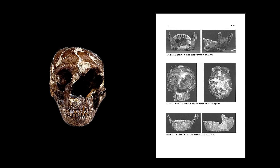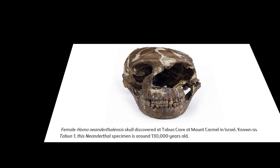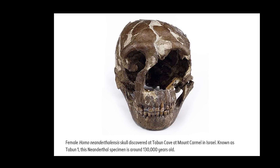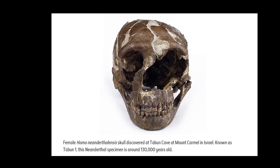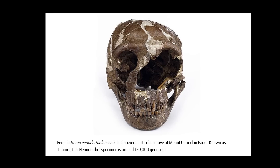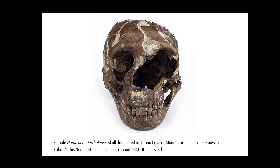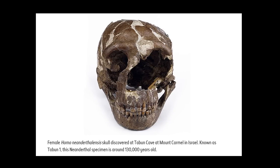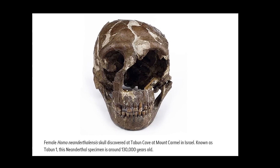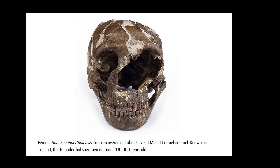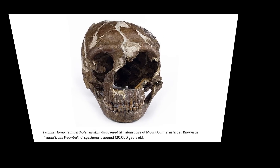Tabun cave was occupied intermittently during the Lower and Middle Paleolithic, from 500,000 to around 40,000 years ago. In that period, deposits of sand, silt, and clay of up to 82 feet accumulated in the cave. Excavations suggest it features one of the longest sequences of human occupation in the Levant. Several fossils were discovered at Tabun cave, including a nearly complete female skeleton, skull, and mandible. The controversial taxonomic attributions of these two fossils — and the chronological and phylogenetic assignment of the remains — are still debated.